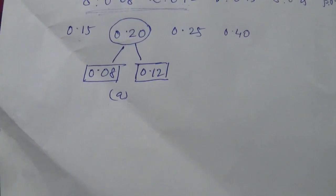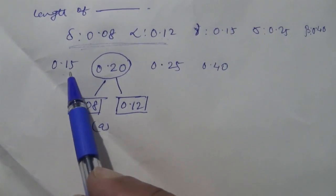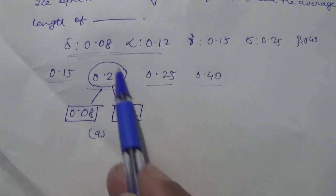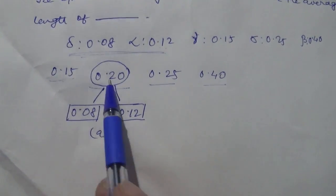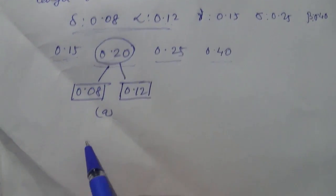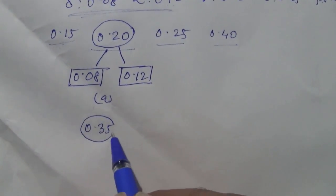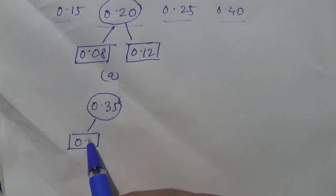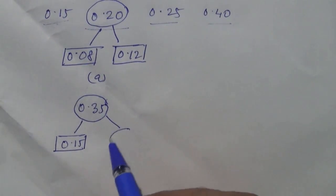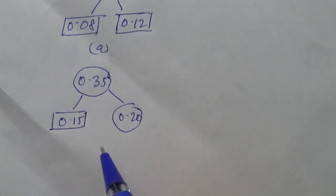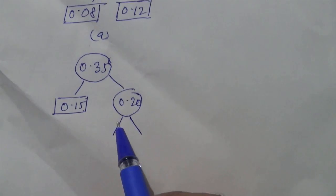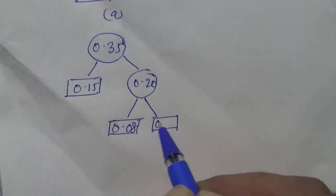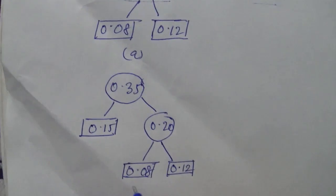Next, draw Figure B. Now consider the remaining values: 0.15, 0.20, 0.25 and 0.40. The smallest two values are 0.15 and 0.20, so add these two and you will get 0.35. The node 0.35 comes from 0.15 on the left and 0.20 on the right, and 0.20 itself was derived from 0.08 and 0.12. This is your structure B.